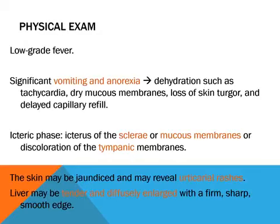When examining these patients, there is low-grade fever; vomiting and anorexia lead to dehydration, and patients usually have tachycardia, dry mucous membranes, loss of skin turgor, and delayed capillary refill. During the icteric phase, there is yellowish discoloration of the sclera and mucous membranes; the skin may be jaundiced in severe conditions, and there can be articular rashes. On per-abdominal examination, hepatosplenomegaly may be present, and the liver is usually diffusely enlarged and tender.